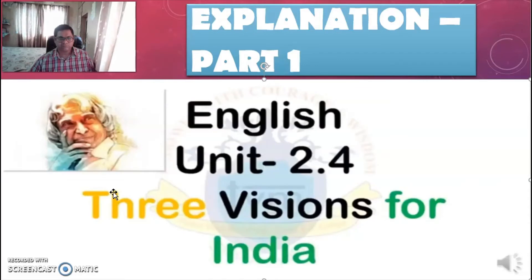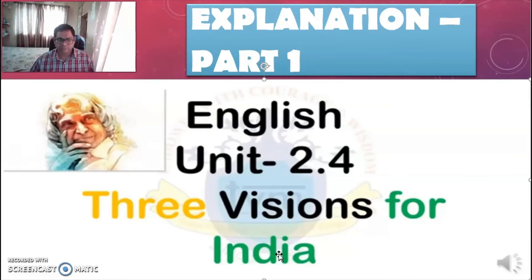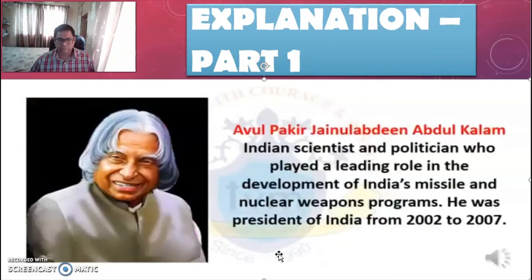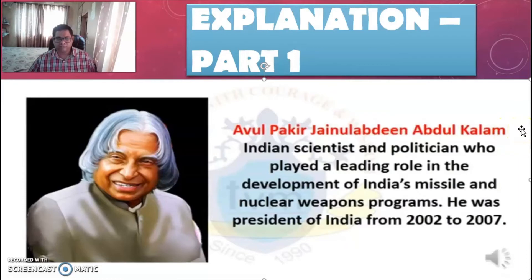English Unit 2.4 — Three Visions for India. Please open page number 40 of your English textbook. Before we begin, the Three Visions for India was given by Dr. Awul Pakir Jainulabdin Abdul Kalam, known to us as Dr. APJ Abdul Kalam. Let's know more about this famous person.